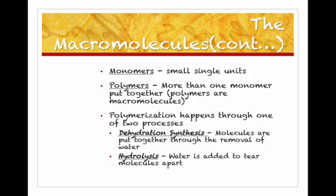To build macromolecules, you use a process called dehydration synthesis. As you bond the monomers together, you have to remove a hydrogen from one monomer and a hydroxide, or an OH, from the other monomer, and then you can form a bond. The hydrogen and the hydroxide then form together to form water, so for every bond you make, you make a water molecule.